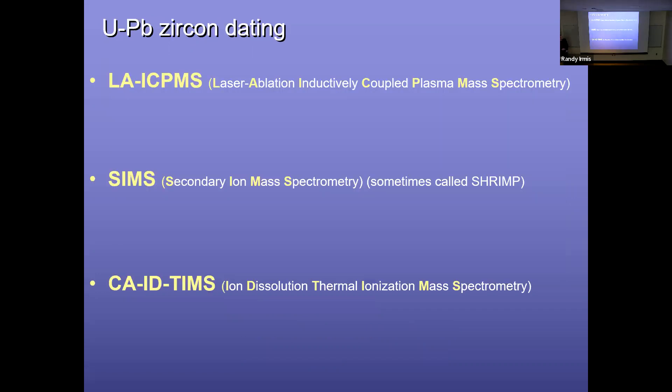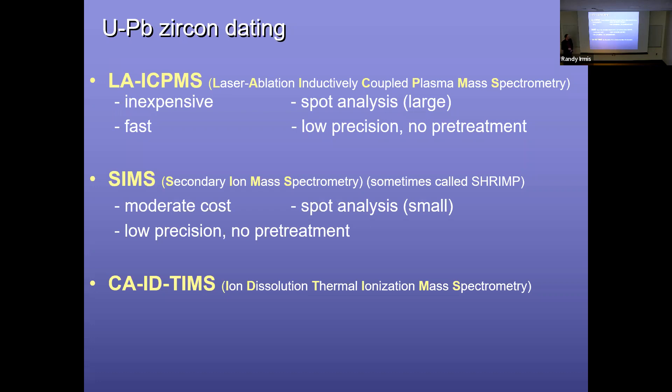The other major technique that's really used in deep time is uranium-lead zircon dating. It can be applied to other minerals like baddeleyite, but zircon is the most common by far. But there's three different methods that are typically applied. One is laser ablation ICPMS, which we can do here in the department. And this has some great advantages, because it's rather inexpensive and fast. You can date a lot of crystals quickly. And it also is a spot analysis on the crystal, so it doesn't use the entire crystal. But it's fairly low precision, and it doesn't use any pretreatment. And I'll explain what that means in a moment. Another is SIMS, or sometimes called SHRIMP. And this also is a spot analysis. It's a bit more expensive, but also lacks pretreatment as fairly low precision.